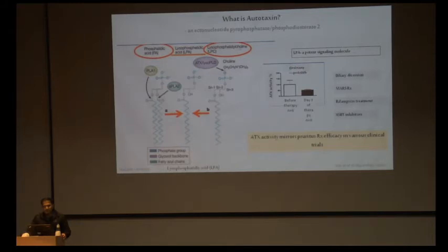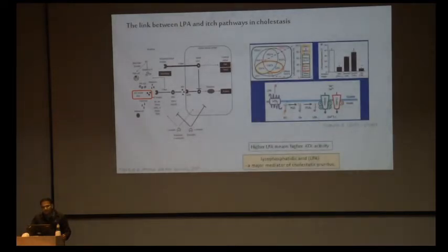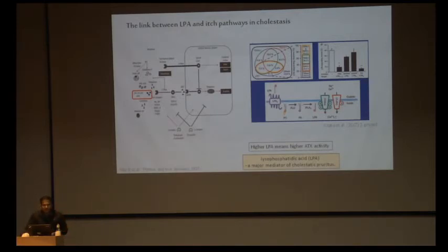Autotoxin levels improve with treatment across various clinical trials. LPA acts on LPA5 receptors on nerve fibers, leading to activation of TRPA1 and calcium influx — the main stimulus for itching sensation. LPA5 is the most important mediator for LPA signaling on nerve fibers. Higher LPA means higher autotoxin activity, and LPA is the major mediator of cholestatic pruritus.